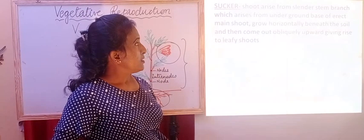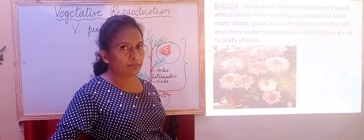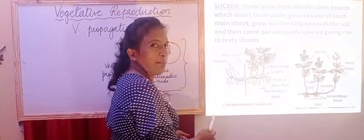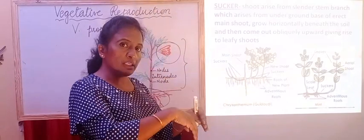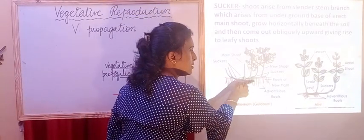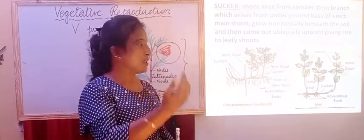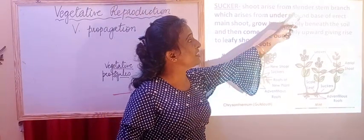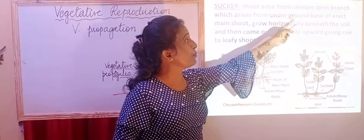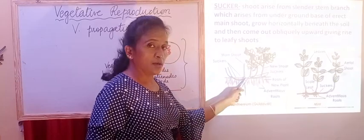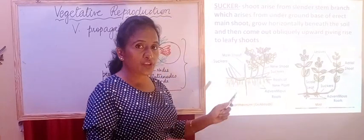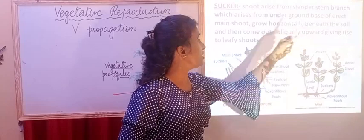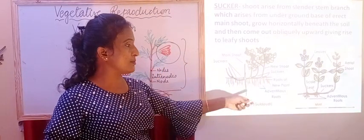Next is sucker. We see this in chrysanthemum and mint. Here the main stem is present. The underground stem grows horizontally and obliquely, giving rise to many plantlets seen above the ground. A shoot arises from the slender stem branch which arises from the underground base of the erect main shoot, growing horizontally beneath the soil and then coming out obliquely upward giving rise to leafy shoots.